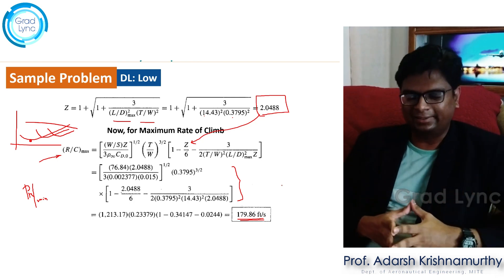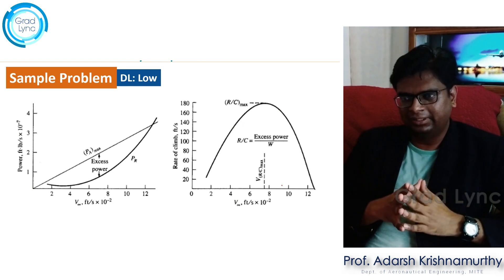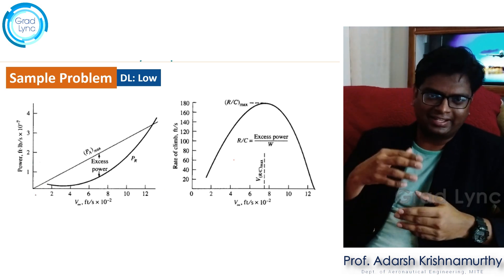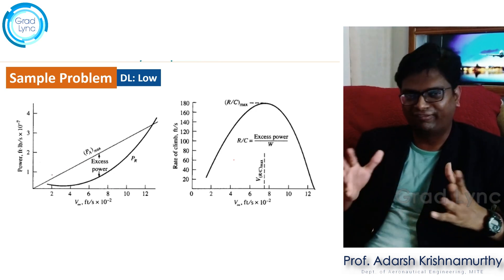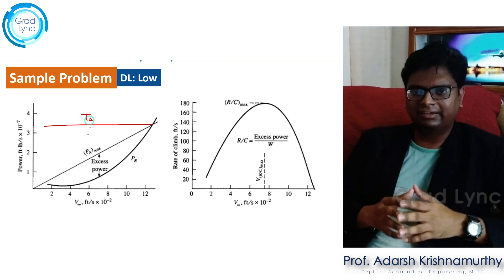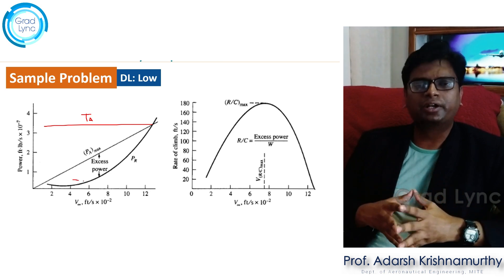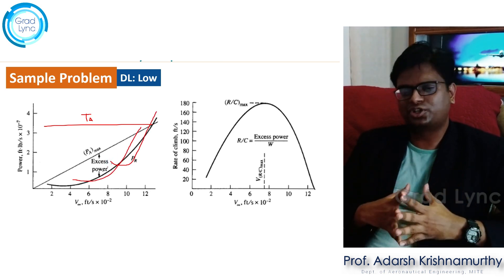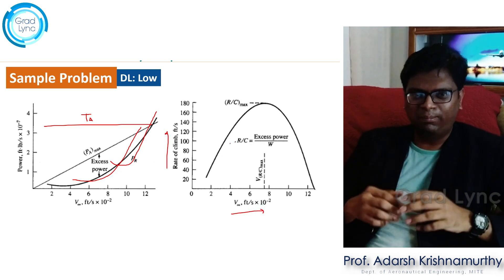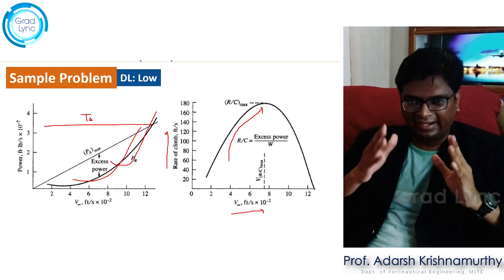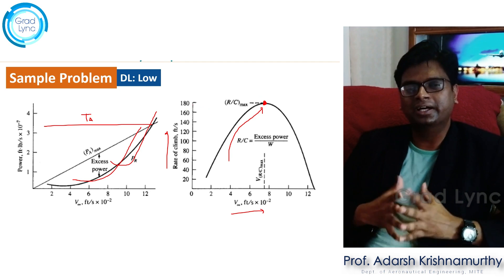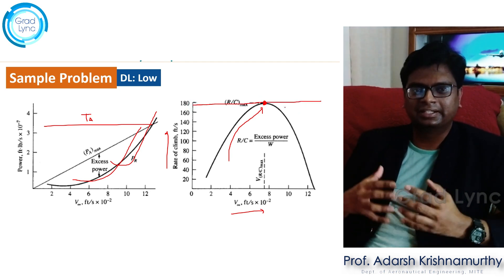To make things clearer, consider the power available and power required curves for a jet aircraft. For a jet, power available varies with velocity, whereas thrust available remains nearly constant with increasing velocity. The excess power also changes accordingly. Plotting the variation of rate of climb with freestream velocity, the rate of climb reaches a maximum value — that is the maximum rate of climb the aircraft can achieve. Beyond this point, as velocity increases, the rate of climb decreases.